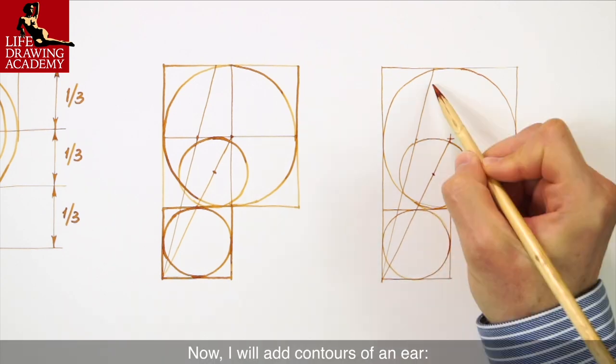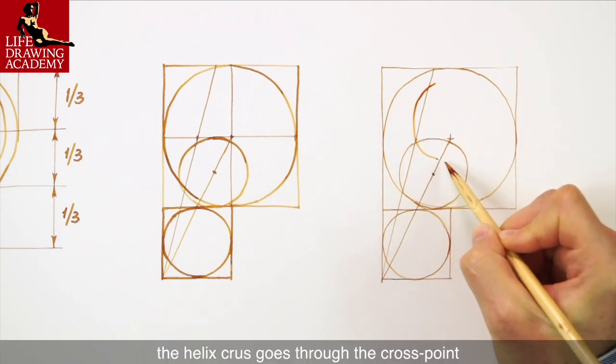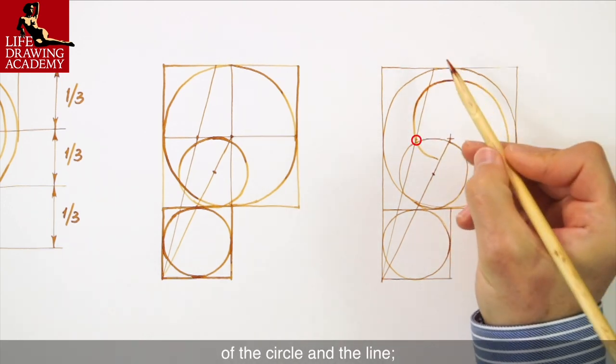Now, I will add contours of an ear. The helix crust goes through the cross point of the circle in the line.